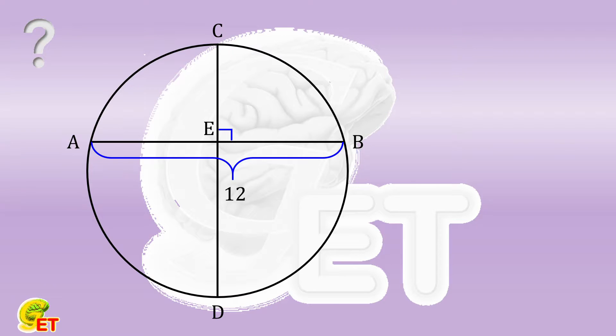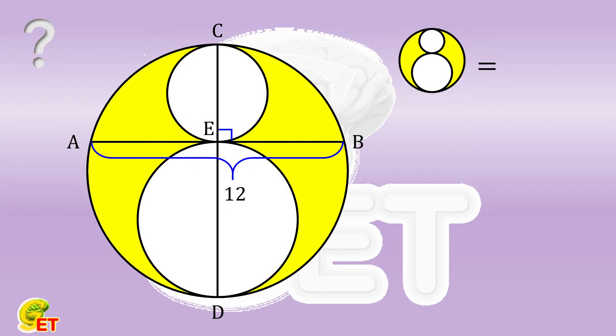Two smaller circles can be made with CE and ED as diameters respectively. So what is the area of the shaded part? Why not give a try, and we will come back soon.